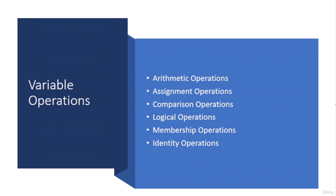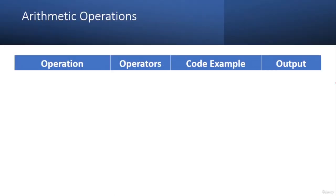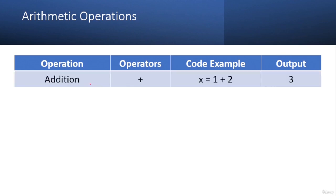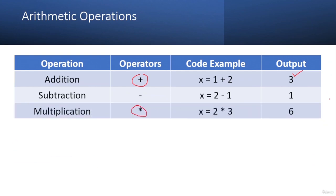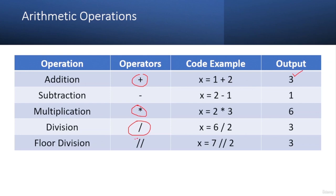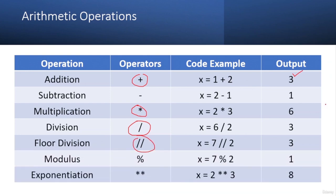Python supports a wide range of operations: arithmetic, assignment, comparison, logical, membership, and identity operations. Arithmetic operations include addition (+), subtraction (-), multiplication (*), division (/), floor division (//), modulus (%), and exponentiation (**). For example, x = 2 ** 3 means 2 to the power 3, which equals 8. Here is code performing these operations: addition, subtraction, multiplication, division, floor division, modulus, and finally exponentiation.